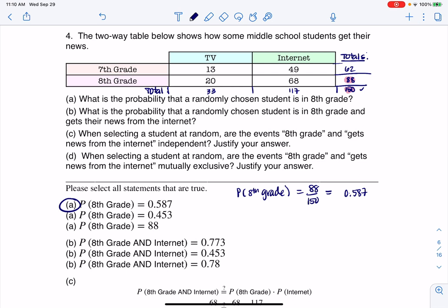And then it says what is the probability that a randomly chosen student is in eighth grade and gets their news from the internet? So we have an AND - we want eighth and internet. Whenever you want an AND, you calculate the probability by looking for where the row and column overlap. Eighth grade and internet overlap at 68, so that's my numerator. My denominator is my sample size, and when I crunch 68 out of 150 I get 0.453.